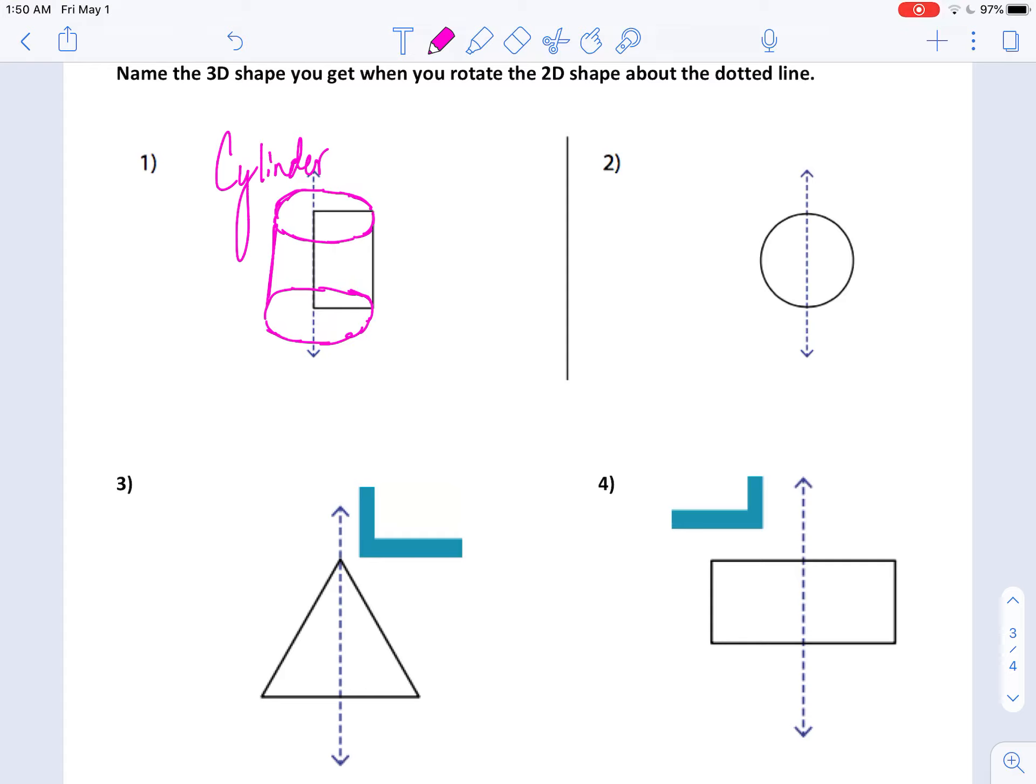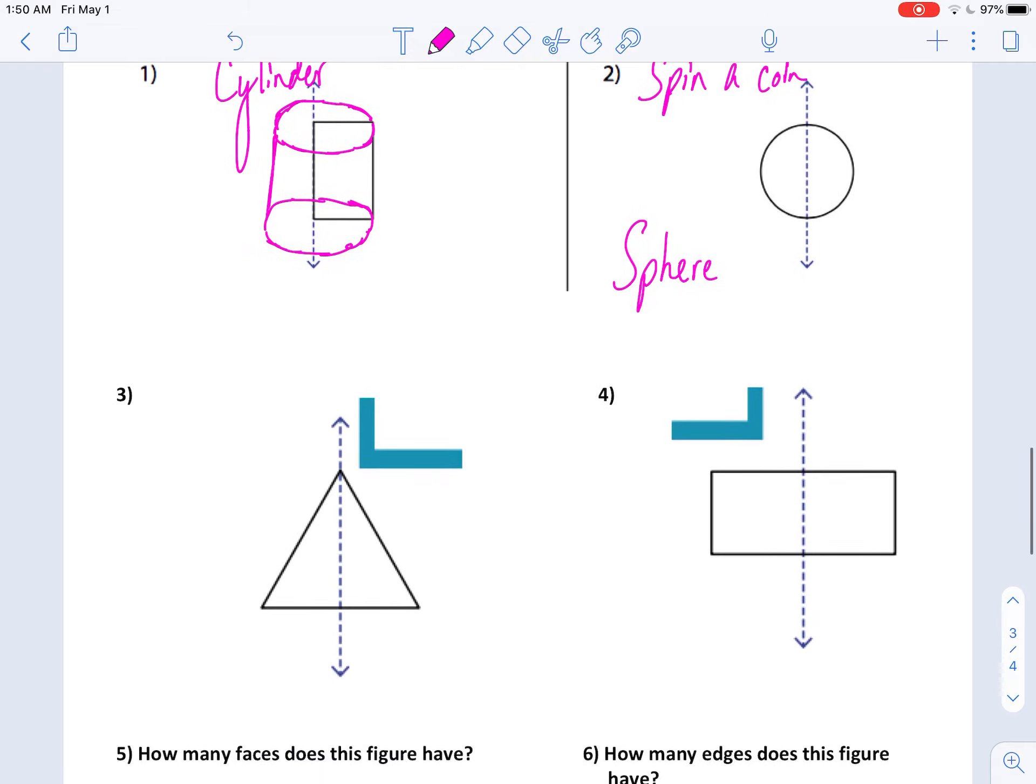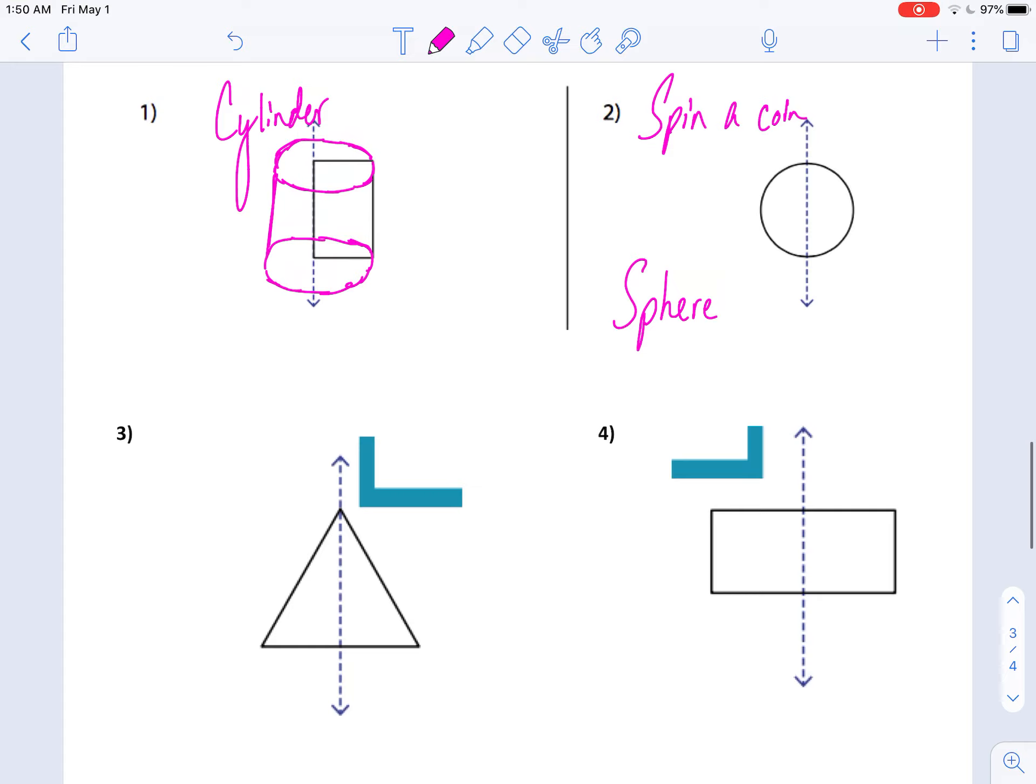This one, number 2. Why don't you spin a coin? Take a penny and spin it and see what kind of shape do you get. You get a sphere there. And these last two I'd like you to try. Number 3. You get a cone. And 4. What do I get if I spin a rectangle? If I spin a rectangle, I get a cylinder. Just like in number 1.